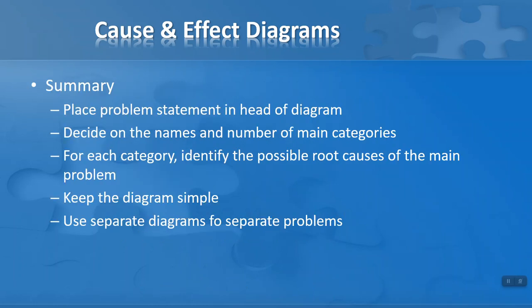So in summary, cause and effect diagrams do a lot of things for us. We place the problem statement in the head of the diagram—that is the effect. We then decide on the names and numbers of main categories.